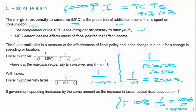The fiscal multiplier is a measure of the effectiveness of fiscal policy and is the change in output for a change in spending or taxation. The marginal propensity to consume C has to be above 0 but less than 1. And if we add in taxes, it would be 1 divided by 1 minus C times 1 minus the tax rate. So if government spending increases by the same amount as the increase in taxes, output rises because C is less than 1.